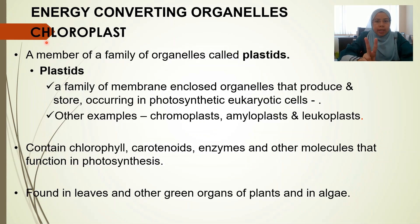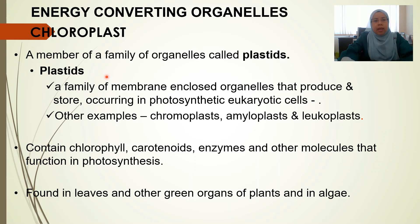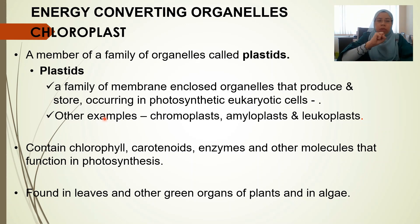Next, the second energy-converting organelle is the chloroplast. Chloroplast is a member of a family of organelles called plastids. Plastids are a family of membrane-enclosed organelles that produce and store food material in the cells of plants and algae. These chloroplasts contain chlorophyll, a green pigment that captures light energy for photosynthesis.